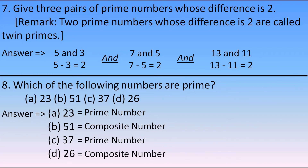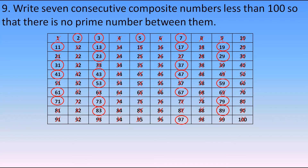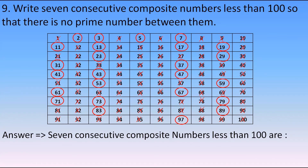The ninth question: write seven consecutive composite numbers less than 100 so that there is no prime number between them. Using the number table, the circled numbers are prime and the scratched ones are composite. Between 89 and 97 there are seven consecutive composite numbers: 90, 91, 92, 93, 94, 95, and 96.